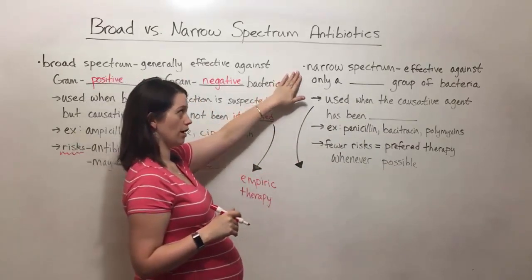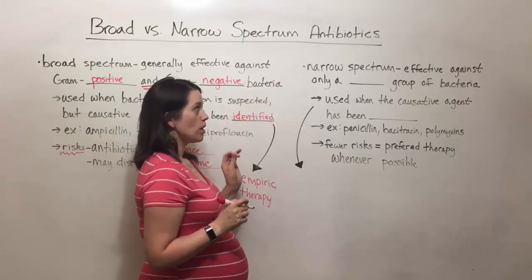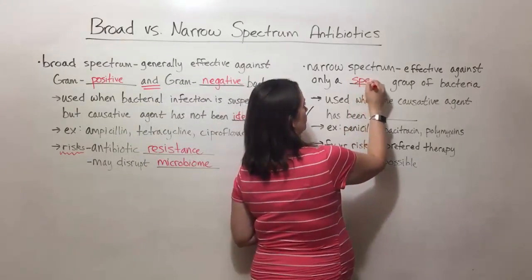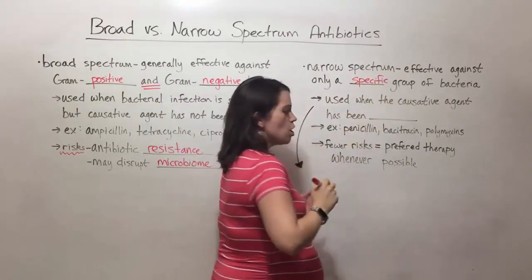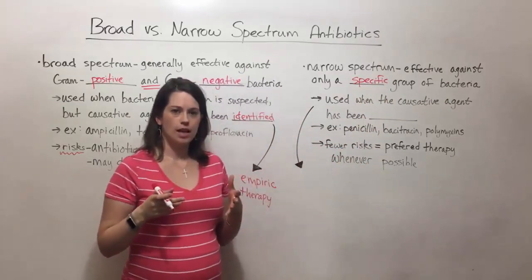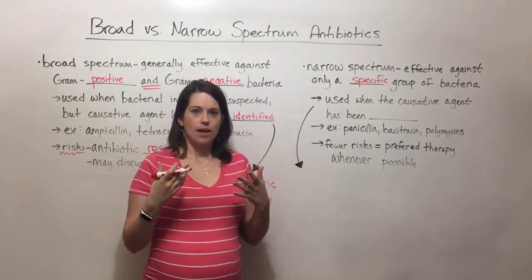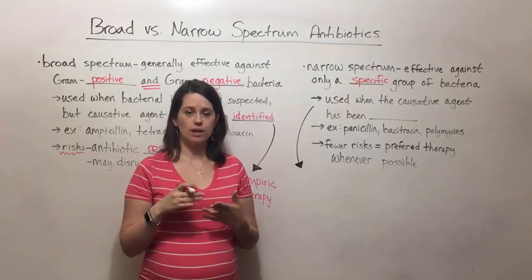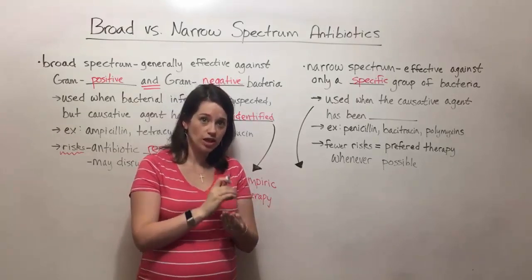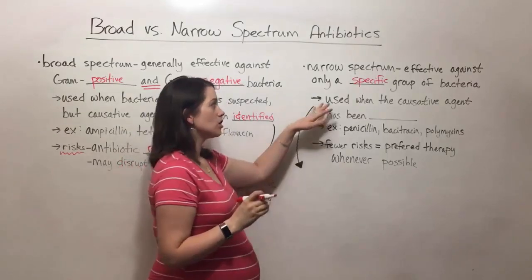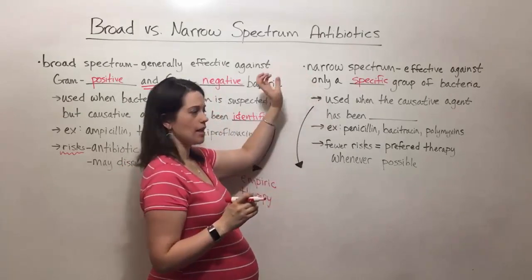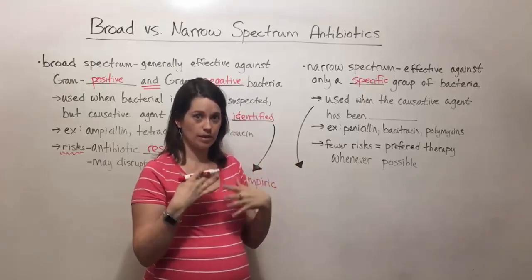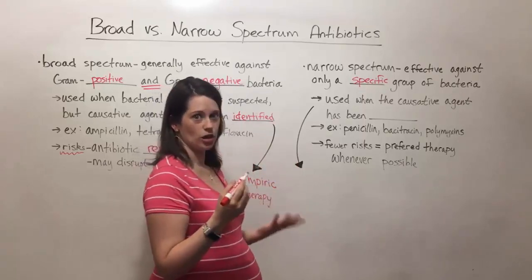Now let's switch to narrow-spectrum antibiotics. These are ones that are effective against only a specific group of bacteria. A doctor is able to say the patient has a bacterial infection and, based on symptoms or lab tests, they can be certain it is caused by a particular kind of bacterium. Narrow-spectrum antibiotics can be prescribed when the causative agent — the type of bacterium causing the disease — has actually been identified.